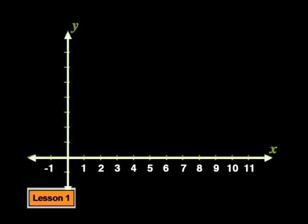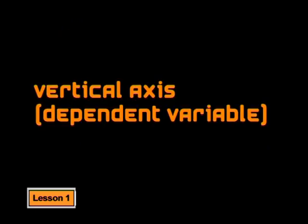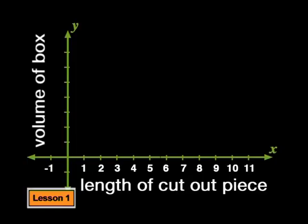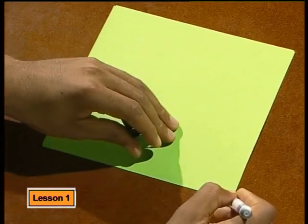What should we use each axis for? I think the vertical axis, being the dependent variable axis, should represent the volume, because the volume depends on the amount we cut off the corner. And the horizontal axis — since the volume of the box depends on how much we cut off from the corner, let's use the horizontal axis for the length of the cutout. We say the volume is a function of the length of the cutout piece. When the length of the cutout is zero — in other words, we don't cut out any corners — there are no sides to fold up, and so the volume of the box would be zero. Let me plot that.